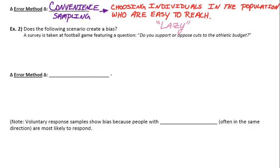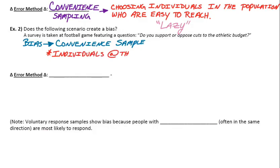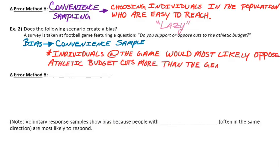So example two says, does the following scenario create a bias? A survey is taken at a football game featuring a question: Do you support or oppose cuts to the athletic budget? So the bias here is created by the fact that this is a convenient sample. Just to give you an idea, the way the data was collected, do you think that this survey is representative of some larger population? The results of the survey probably wouldn't be representative of members of the entire school or of the entire community. And the reason being is because it was taken right in front of the football game. So individuals at the game would most likely oppose athletic budget cuts more than the general population would on average. The reason being is the people at the football game probably enjoy the sport and would probably not like to see the athletic budget be cut.